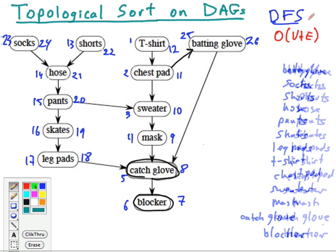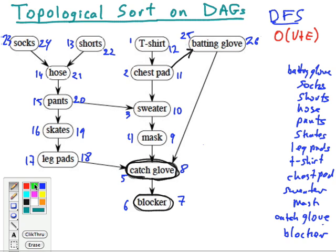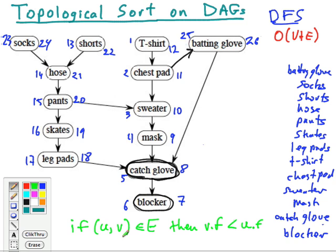Now let's consider why this works. To show correctness, we're going to show that if the graph G is a DAG, then topological sort correctly produces a topological sort of G. It suffices to show that if UV is in the graph, then V's finishing time is sooner than U's finishing time. The link from U to V says we've got to finish U before V. If U's finishing time is greater than V's finishing time...